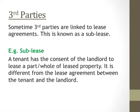There are also what we call third parties in contracts. Sometimes third parties are linked to lease agreements — this is known as a sublease. A tenant has the consent of the landlord to lease a part or the whole of the leased property. It is different from the lease agreement between the tenant and the landlord, but this can only be done with the consent of the landlord. It is illegal for a tenant to sign another agreement with someone else allowing them access to the property without the landlord's consent.